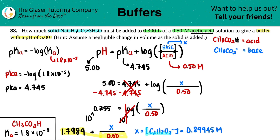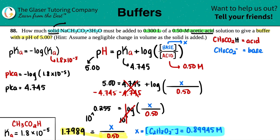Hold on — did we answer the question? They're asking for how much solid must be added. We only found the molarity of the conjugate base, the acetate ion, not the full compound with the sodium and water. Since they said it's a solid, we measure it on a balance, which measures grams. Right now we're at molarity, so we need to go from molarity to grams.